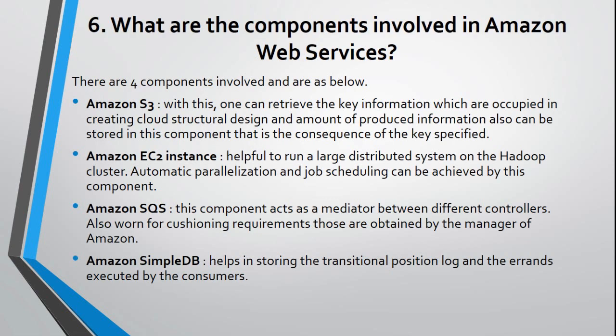Question 6: What are the components involved in Amazon Web Services? There are four components: Amazon S3 – with this, one can retrieve key information used in creating cloud structural design, and the amount of produced information can also be stored in this component. Amazon EC2 instance – helpful to run a large distributed system on the Hadoop cluster; automatic parallelization and job scheduling can be achieved. Amazon SQS – this component acts as a mediator between different controllers and is used for buffering requirements obtained by the Amazon manager. Amazon SimpleDB – helps in storing the transitional position log and the tasks executed by the consumers.